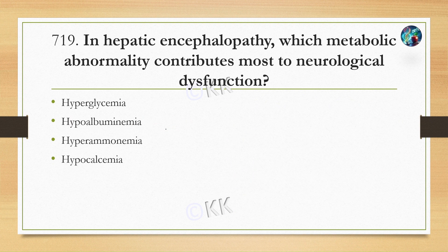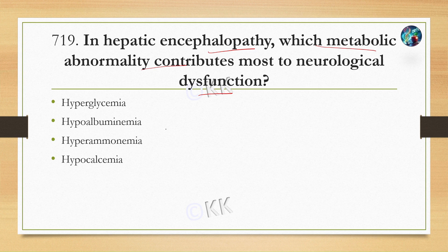Next question: in hepatic encephalopathy, which metabolic abnormality contributes most to neurological dysfunction? Option A: hyperglycemia. Option B: hypoalbuminemia. Option C: hyperammonemia. Option D: hypocalcemia. The correct answer is Option C: hyperammonemia.